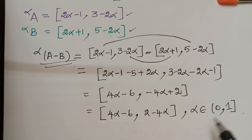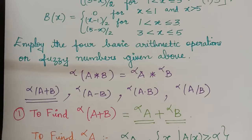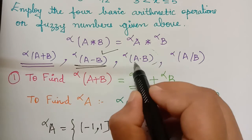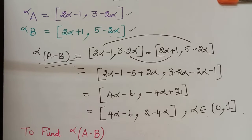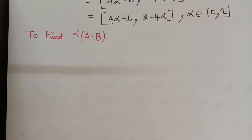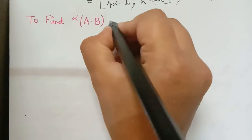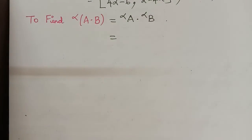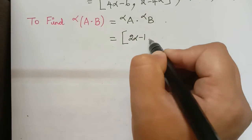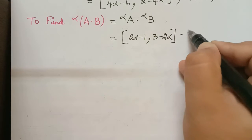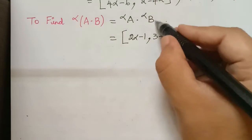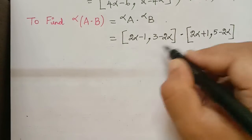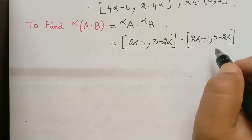We have found the alpha cut of a minus b. Now we need to find the alpha cut of a multiplied with b. By definition, the alpha cut of a·b equals the alpha cut of a multiplied with the alpha cut of b. The alpha cut of a is [2α − 1, 3 − 2α] and the alpha cut of b is [2α + 1, 5 − 2α]. We multiply these two intervals using the concept of arithmetic operations on intervals.